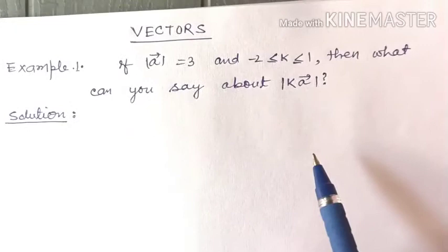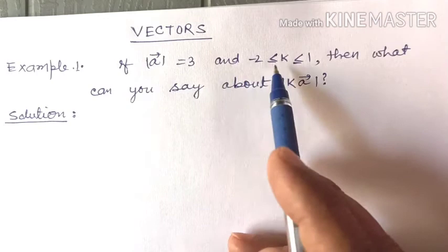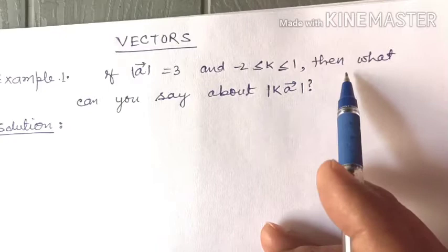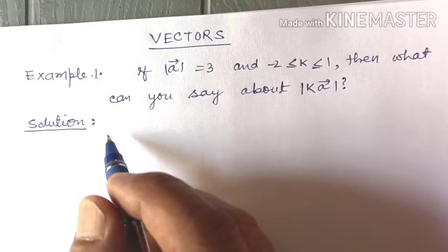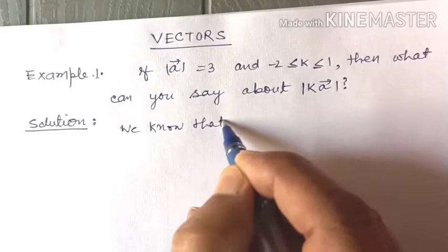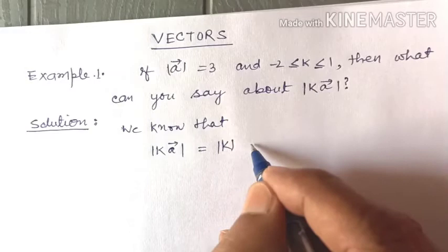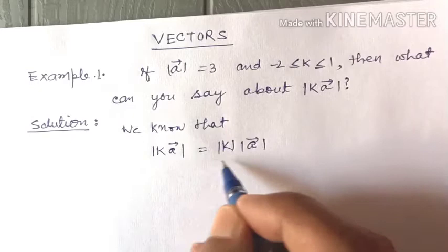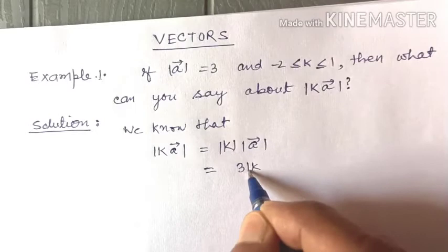Hello students. Some questions on vectors. First example: if modulus of a vector is equal to 3 and k lies between minus 2 and 1, then what can you say about modulus of ka vector? We know that modulus of ka vector is equal to modulus of k into modulus of a vector. Since modulus of a is 3, this becomes 3 times mod k.